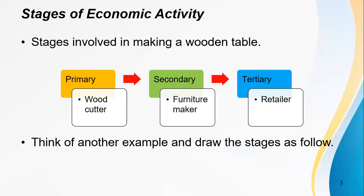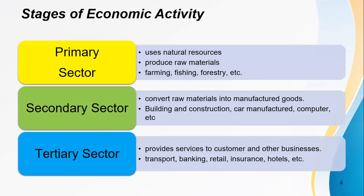There are three stages involved in making a wooden table: primary sector, secondary sector, and tertiary sector. Primary sector refers to a woodcutter, secondary sector refers to the furniture maker, and the last sector refers to retail. Think of another example and draw the stages as follows.